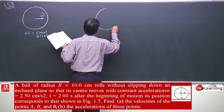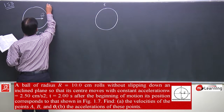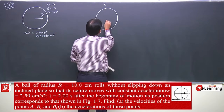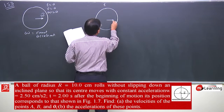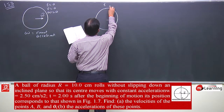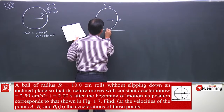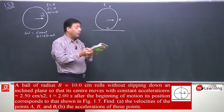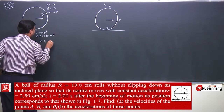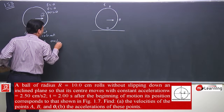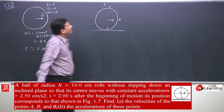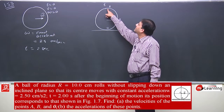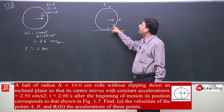After some time t, this is the initial situation where velocity is 0 and angular velocity is 0. After some time t, it's at this situation where point A is the topmost point, point B is here, and point O is here — they are indicated. Find velocity of point A, B, and O. The angular acceleration is constant at 2.5 cm per second square. After 2 seconds, they asked about velocity and acceleration of points A, B, and O. Point A is the topmost point, point B is this point, and point O is this point.